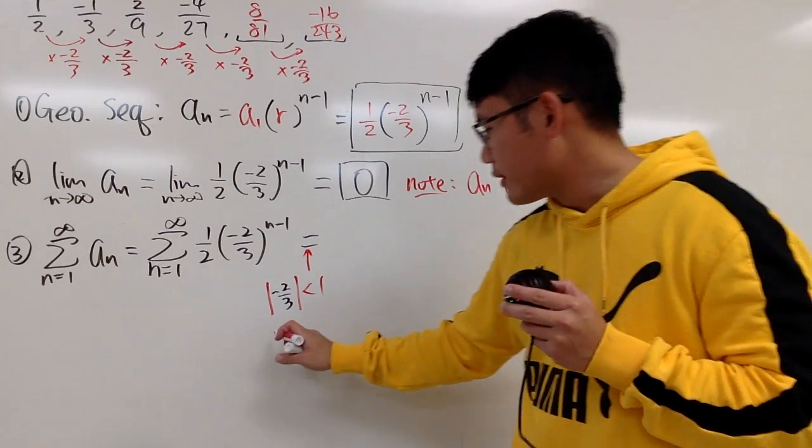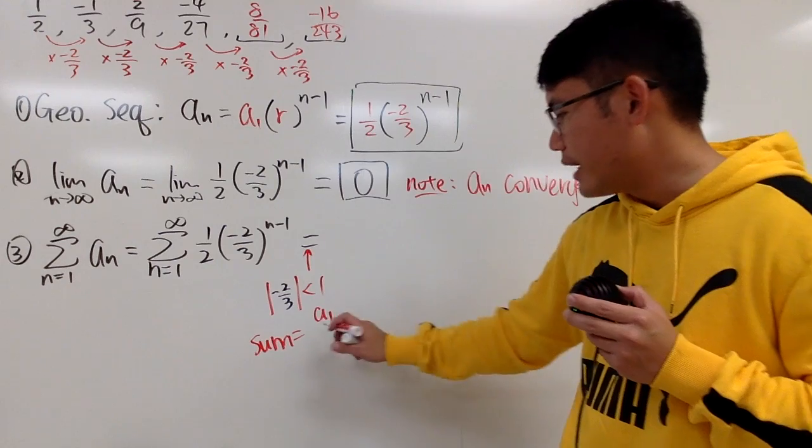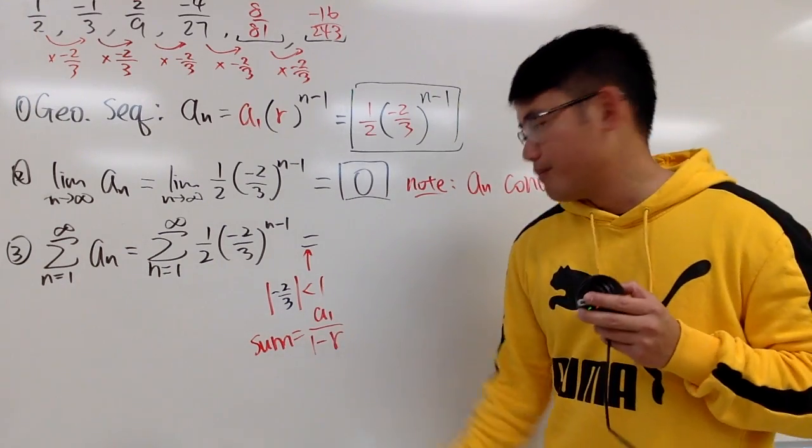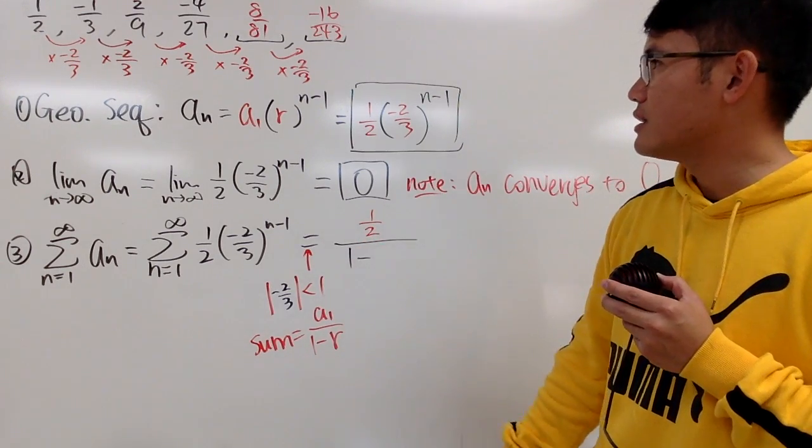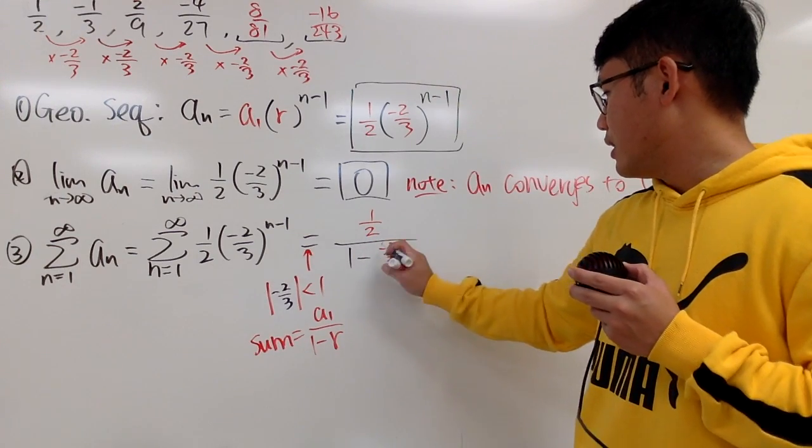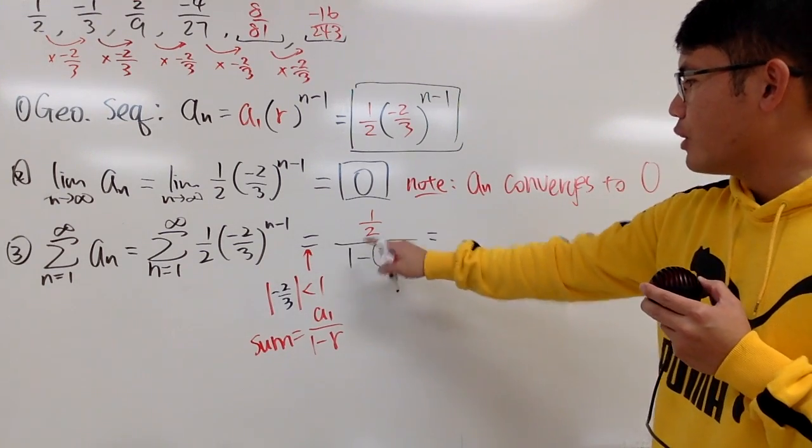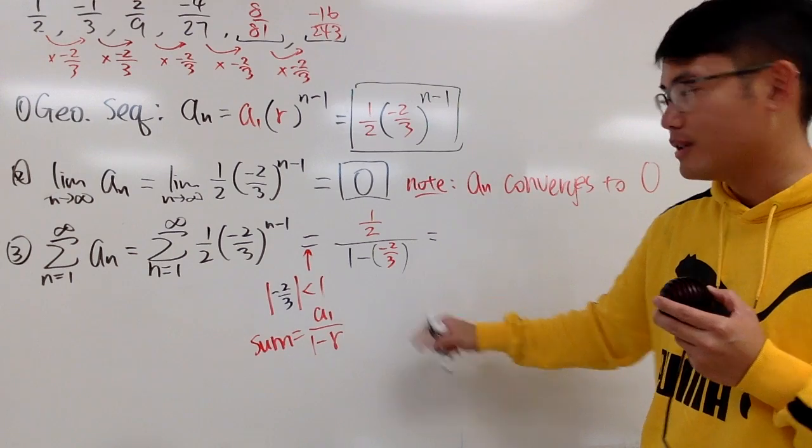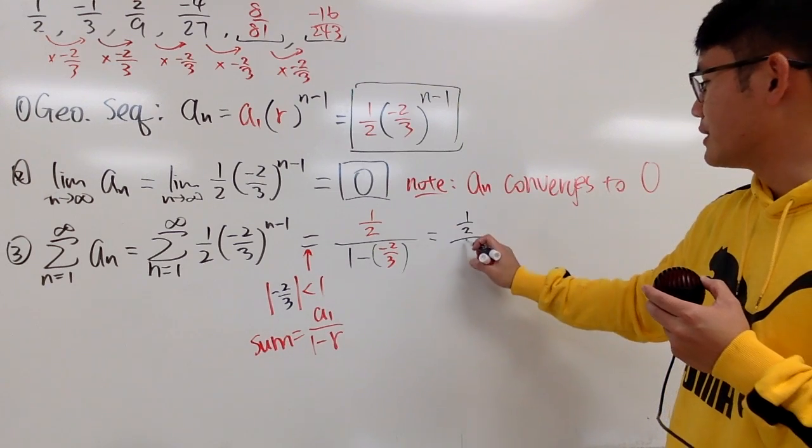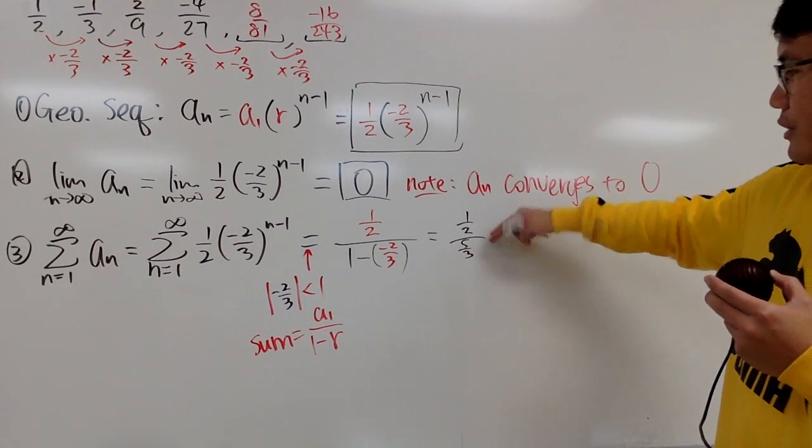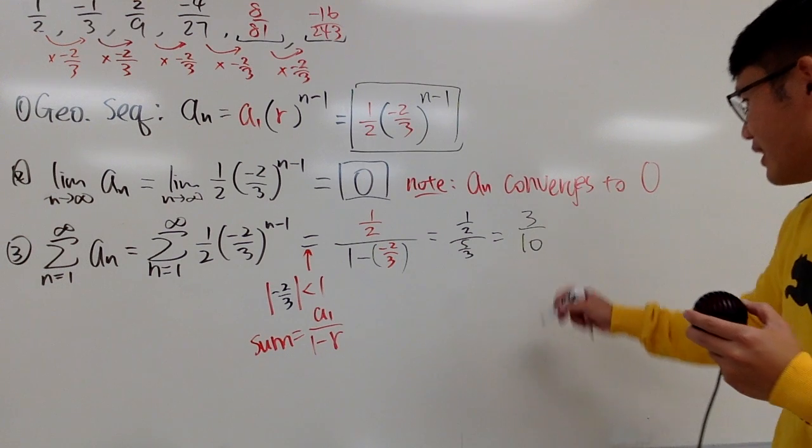So that means the sum is going to be equal to a1, namely the first term, divided by 1 minus r. So a1 is just 1/2, over 1 minus r, which is -2/3. And of course, if you want to see why this is true, you can check out my other video. But anyway, you can just figure this out. This is going to be 1/2 over 1 plus 2/3. Let me just actually work it out for you: 1/2 times, this is 3/3 plus 2/3, which is 5/3. So you kind of just take this and you flip that, and then this times that, this times that, so you get 3/10. So that's pretty much it.